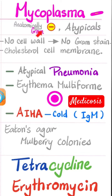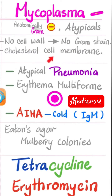Mycoplasma appears gram-negative or similar to gram-negatives, but in reality it does not stain well with gram-stain. For many reasons, one of them is that mycoplasma doesn't even have a cell wall — that's why gram-staining is impossible for mycoplasma. It does have a cell membrane, just like any other organism: cell membrane yes, cell wall no.